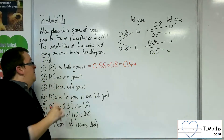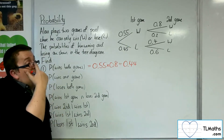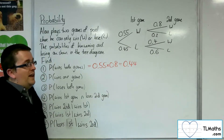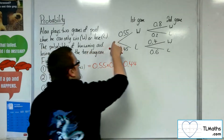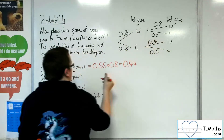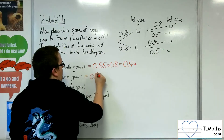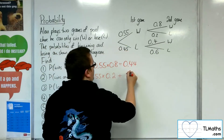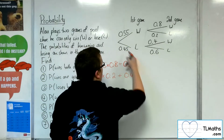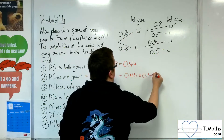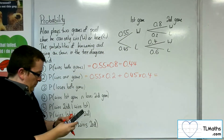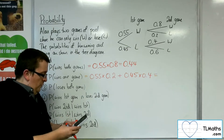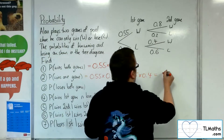What's the probability of him winning one game? That means he either won the first game or he won the second game only. So he could either have won the first game and then lost the second game — that would be 0.55 times 0.2 — or he could have lost the first game and then won the second game. So we'd have 0.55 times 0.2 plus 0.45 times 0.4, and that gets us to 0.29.